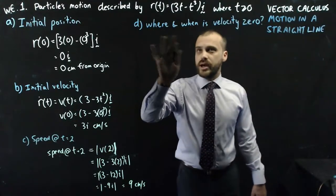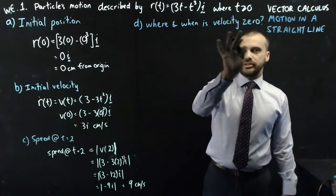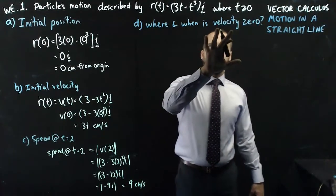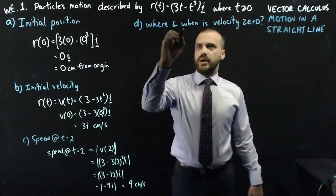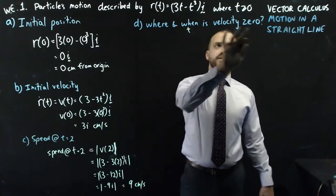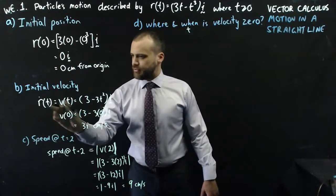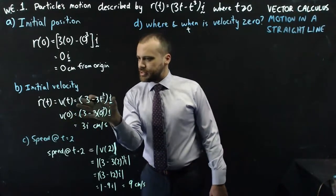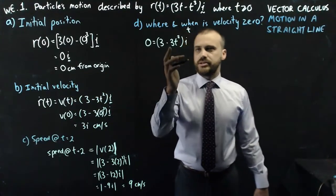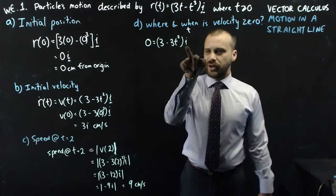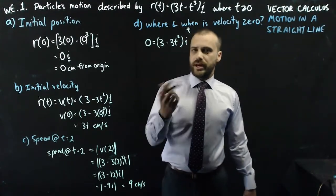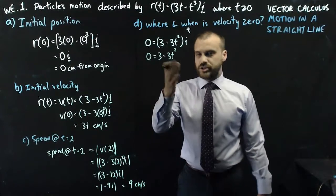This is the first real challenging one. Where and when is velocity zero? So let's look at this. We want to know where and when. So when is t and where is its displacement. Velocity zero. So we have a velocity function. There's our velocity function. Let's let our velocity function equal zero. So we have 0 = (3 - 3t²)i. Now we don't need that i in there, so we can just rewrite this without an i, and then rearrange to solve for t.